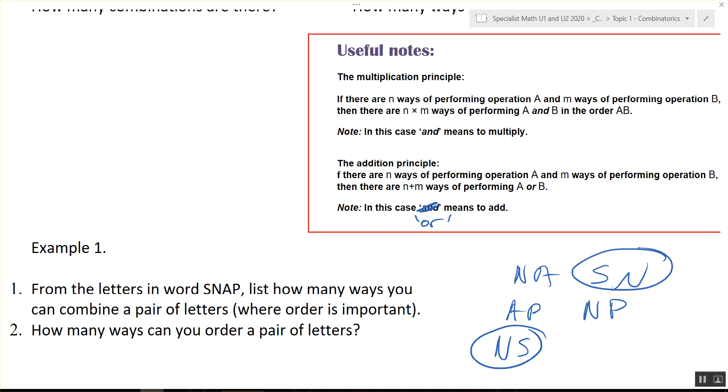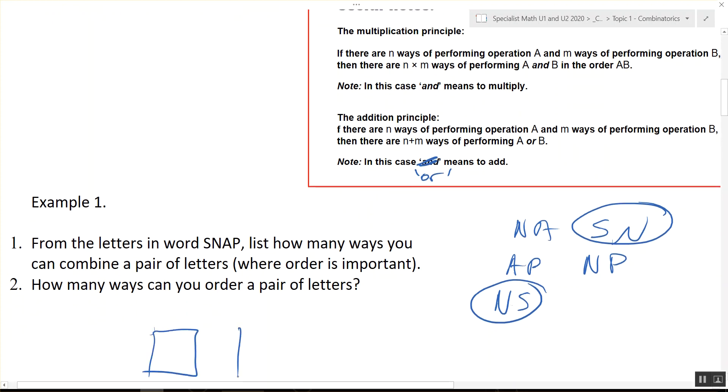We could literally write out every single combination, or what's the faster way? It's a letter and another letter, so it's the multiplication principle. How many letters are there to start with for the first letter being filled? We've got two letters, there's four letters that could fit in that first box. But once we've used one of the letters, there's only three left. So the total number of combinations of a pair of letters is 12 combinations.